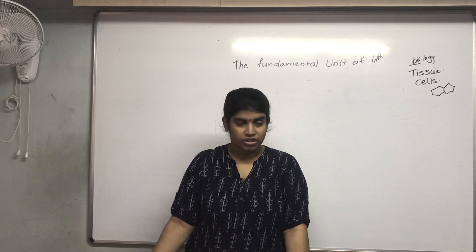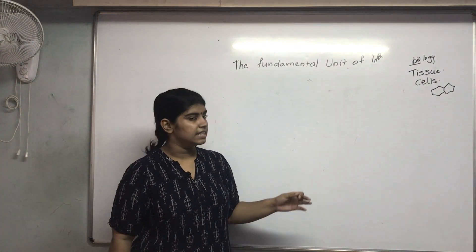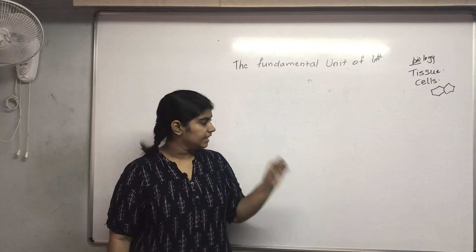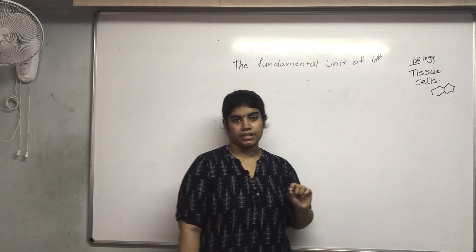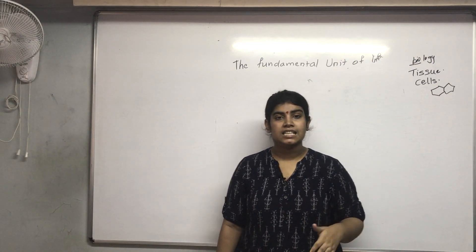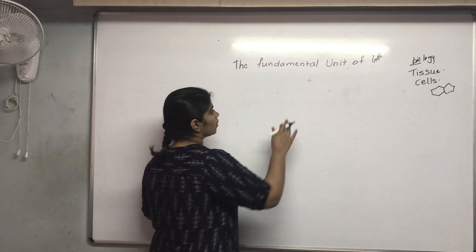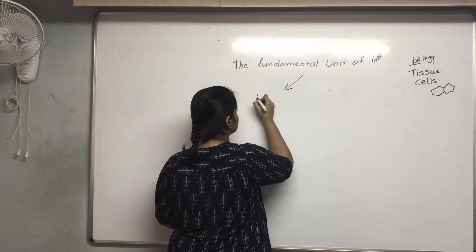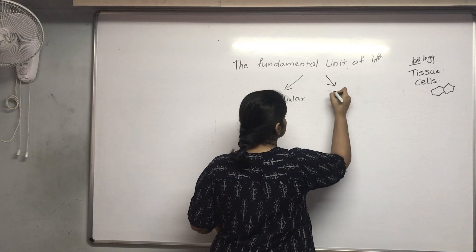Now we will move on to the structure of the cell. The cell has various structures, from the most primitive cell — meaning the very basic cell first found — to the modern or most advanced cell. Basically, the cell is divided into two types: unicellular and multicellular.